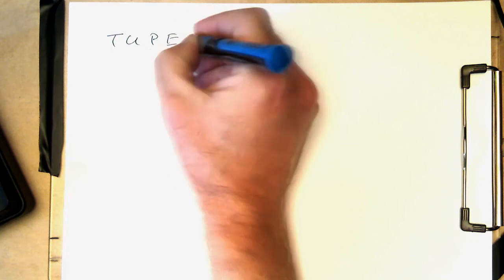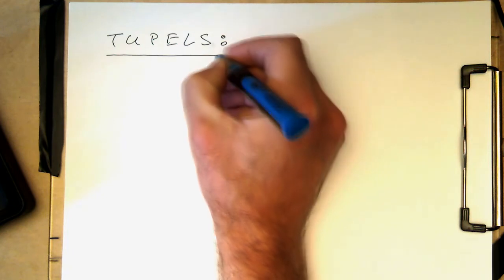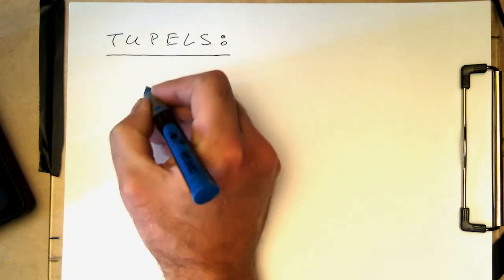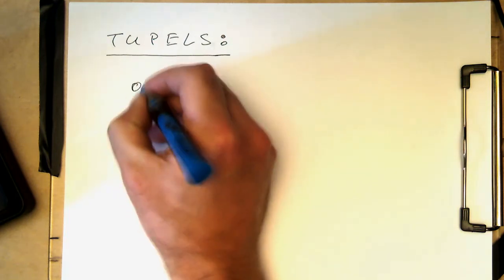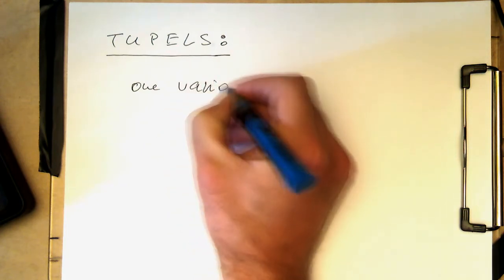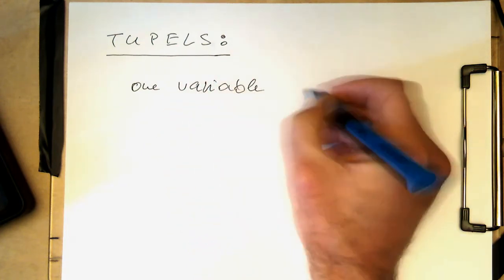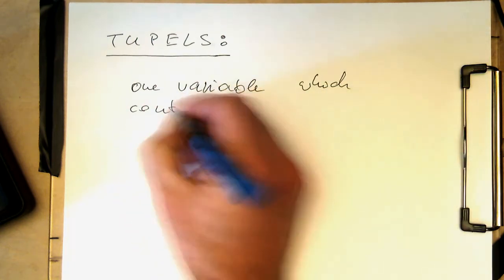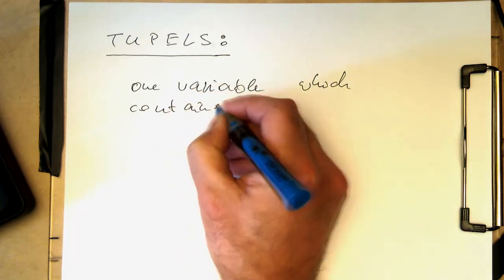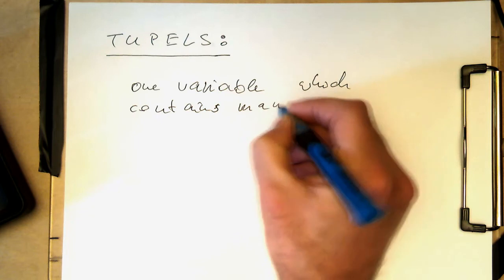So I've missed out so far one datatype which is quite useful for functions, and these are tuples. So these are essentially variables, and it's essentially a variable which contains many variables.